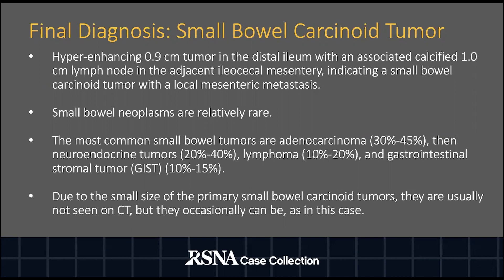It is important to note that small bowel neoplasms are relatively rare. The most common small bowel tumors include adenocarcinoma, neuroendocrine tumors, lymphoma, and gastrointestinal stromal tumors. Due to the small size of the primary small bowel carcinoid tumors, they are usually not seen on CT imaging, but they occasionally can be, as in this case.